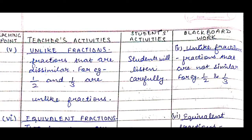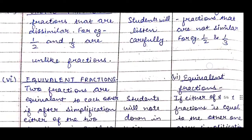Then come unlike fractions — fractions that are dissimilar, just the opposite of like fractions. For example, 1/2 and 1/3 are unlike fractions. Even after simplification these fractions cannot become equal. Fractions that when simplified remain dissimilar are unlike fractions. We write on the board: unlike fractions — fractions that are not similar. Example: 1/2 and 1/3.